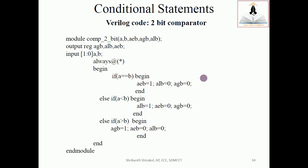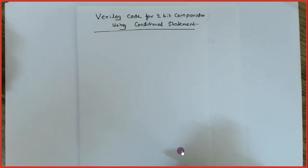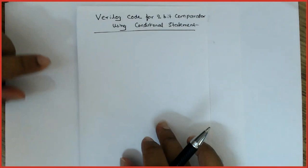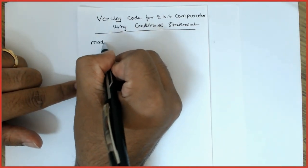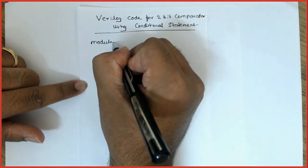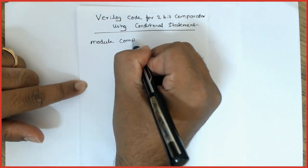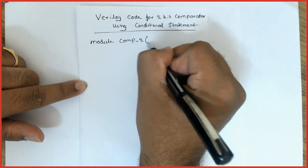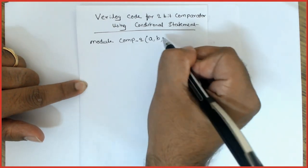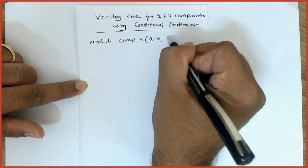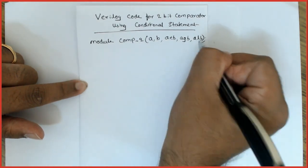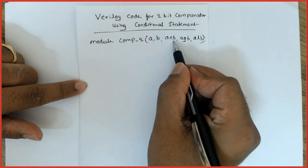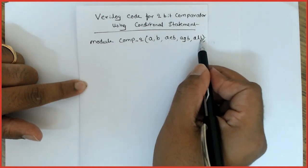We'll write Verilog code for a 2-bit comparator using conditional statements. The code goes like this: first statement is module, then the identifier name. I give it as comp_2. a and b are my 2-bit inputs. aeb, agb, alb are outputs—aeb is a equal to b, agb is a greater than b, alb is a less than b.